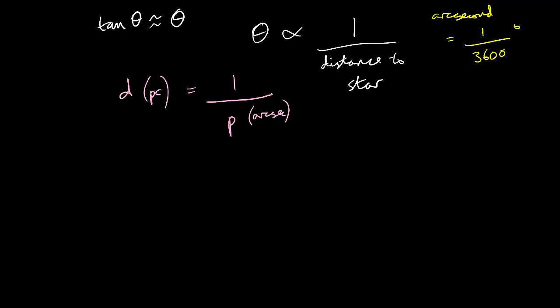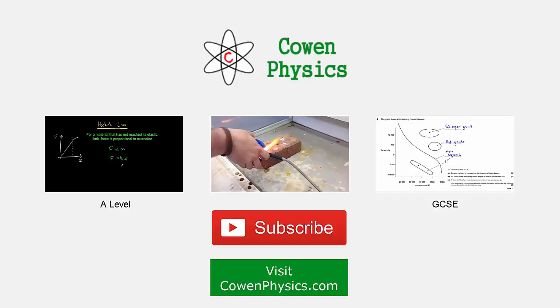far away for the parallax method to actually apply. Let's finish with a quick example. A star has a parallax angle P of 0.02 arc seconds. How far away is it? Well, simply d equals one divided by P, so one divided by 0.02 gives us 50 parsecs. Easy.